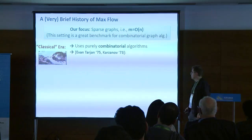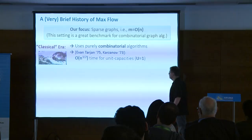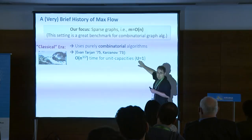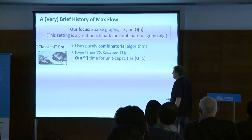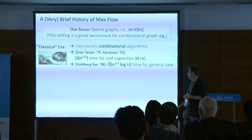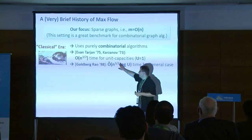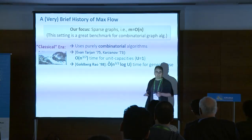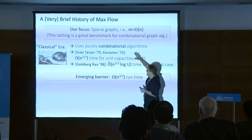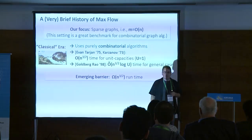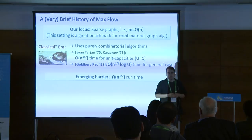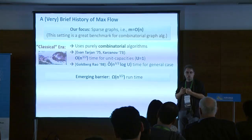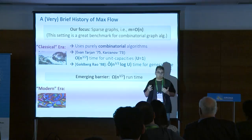This result was from the 70s. It took quite a while — the work of Goldberg and Rao — to get a similar running time for the general case when capacities are not necessarily uniform. That was the state of the art for classical algorithms. As you can see from this line of work, in the 70s we knew how to solve this problem in n-to-the-three-halves time, and over the years we did not really make much progress. This inability of classical methods to go further somehow motivated the switch of methodology — what we now call the modern era.